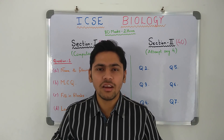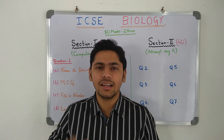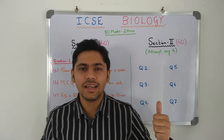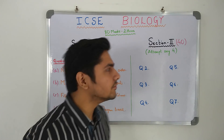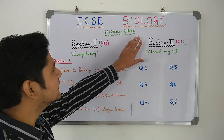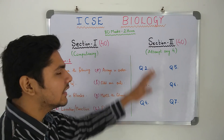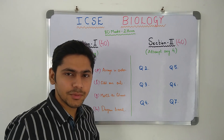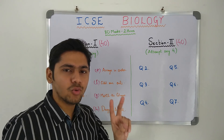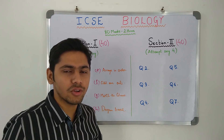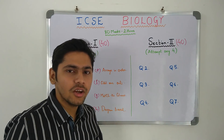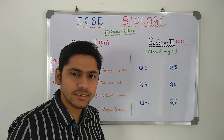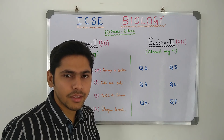If you want to get notified of all our videos, please hit the thumbs up. ICSC biology science paper 3. This is an 80 marks question paper and you will have 2 hours to solve the whole thing. You will also get additional 15 minutes to read the whole question paper.